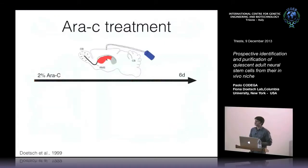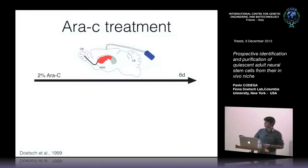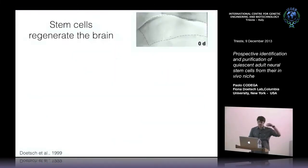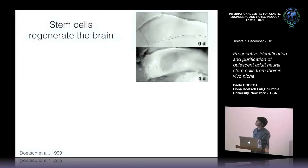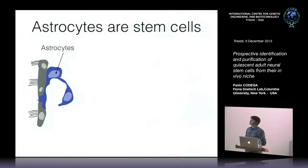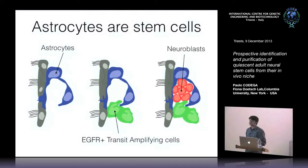To answer this question, Fiona Doetsch in 1999 developed a technique by infusing AraC, an anti-mitotic drug that kills all dividing cells, via an osmotic pump on the surface of the brain. After six days, all the chains of migrating neuroblasts were completely eliminated. But when the drug was withdrawn, after a few days new neuroblasts were generated, meaning that some resident cells have stem cell properties. We now know that astrocytes are the stem cells in the niche, giving rise to EGF receptor positive transit amplifying cells, which in turn give rise to neuroblasts.